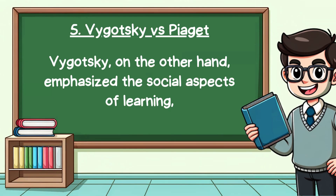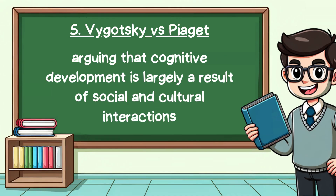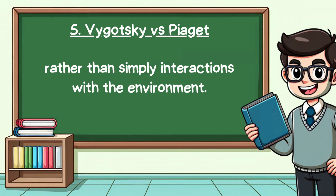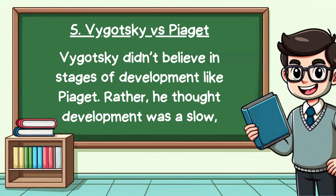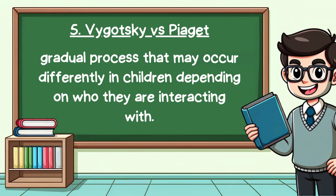Vygotsky, on the other hand, emphasized the social aspects of learning, arguing that cognitive development is largely a result of social and cultural interactions, rather than simply interactions with the environment. Vygotsky didn't believe in stages of development like Piaget either. Rather, he felt that development was a slow, gradual process that may occur differently in children depending upon who they are interacting with.